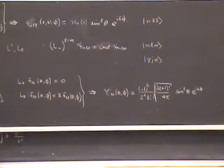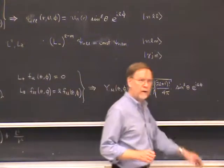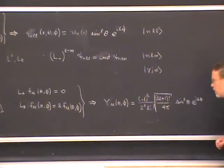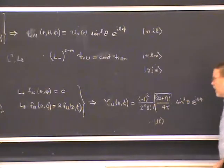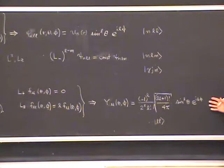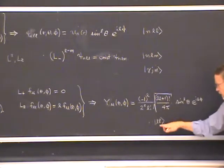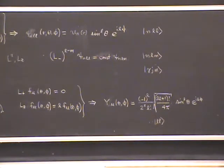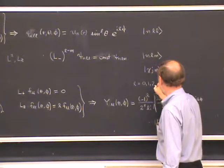The simultaneous eigenstates of L-squared and Lz on the unit sphere are the Y_LMs — the spherical harmonics. In ket language, write it as |L, L⟩. Notice that on the unit sphere there is no degeneracy: specifying L-squared and Lz quantum numbers gives a unique wave function. Also, the angular momentum quantum number L only takes on integer values — there are no half-integer values.